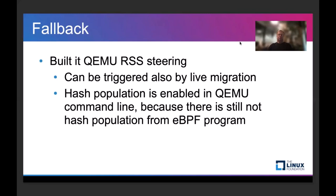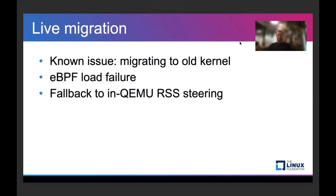What happens if for some reason we cannot use BPF? There will be a fallback to the built-in QEMU RSS steering. There are several reasons beyond failed loading: it can also be triggered by live migration. Also, if hash population is currently enabled in the QEMU command line, we fall back to built-in QEMU RSS steering and do not use BPF, because that part of BPF functionality is still not implemented. Regarding live migration issues: we now have a dependency on the kernel version, so if we migrate to a host with an older kernel version we will not be able to load BPF, and we will fall back to built-in QEMU RSS steering.